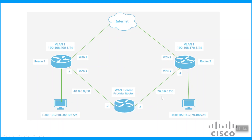Router2 is connected to the WAN service provider router with the 70.0.0.0/30 private IP connectivity. Router1 is connected to the WAN service provider router with the 40.0.0.0/30 IP connectivity. There are two hosts connected on the routers: 192.168.200.107 on Router1, and 192.168.170.109 on Router2. We'll check reachability between these hosts and verify that traffic forwards through the WAN2 interface of both routers.